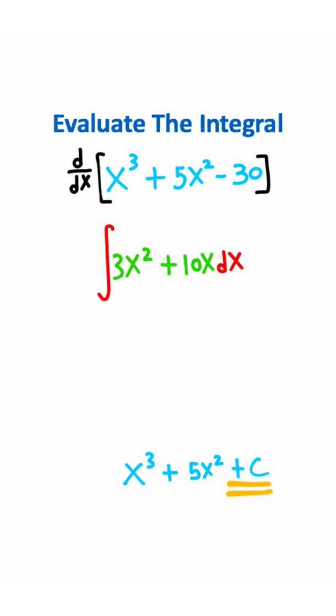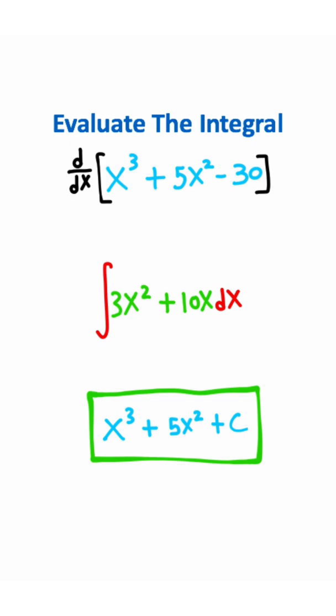Now why do we add a plus c? What does this plus c do? Well this plus c is just accounting for the missing constant. Notice here that we have a negative 30 and notice here we have a plus c. So this c is equal to negative 30 which is what happened to the minus 30 when we lost it when we took the derivative.